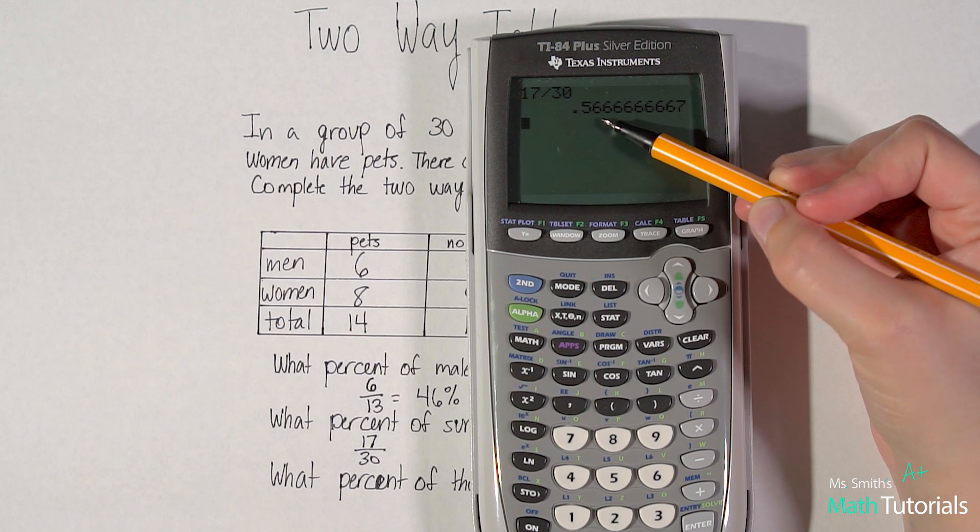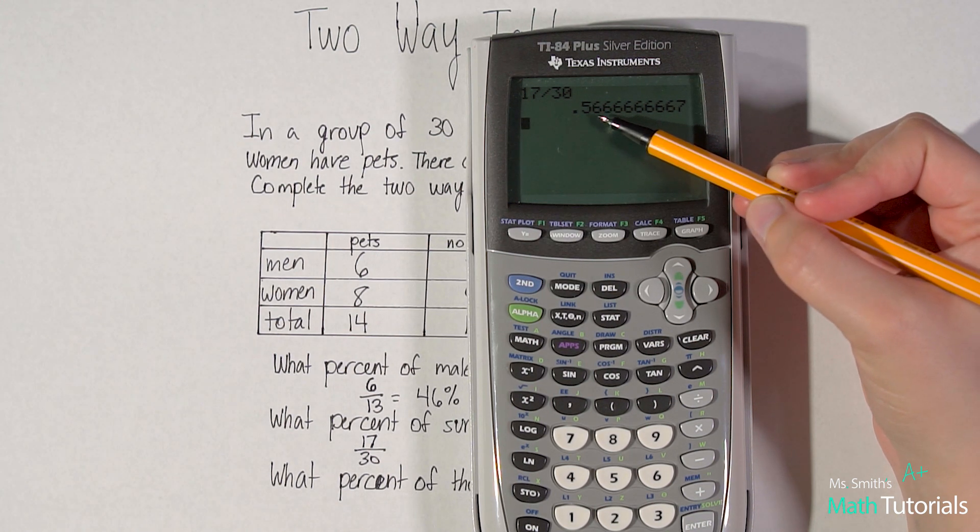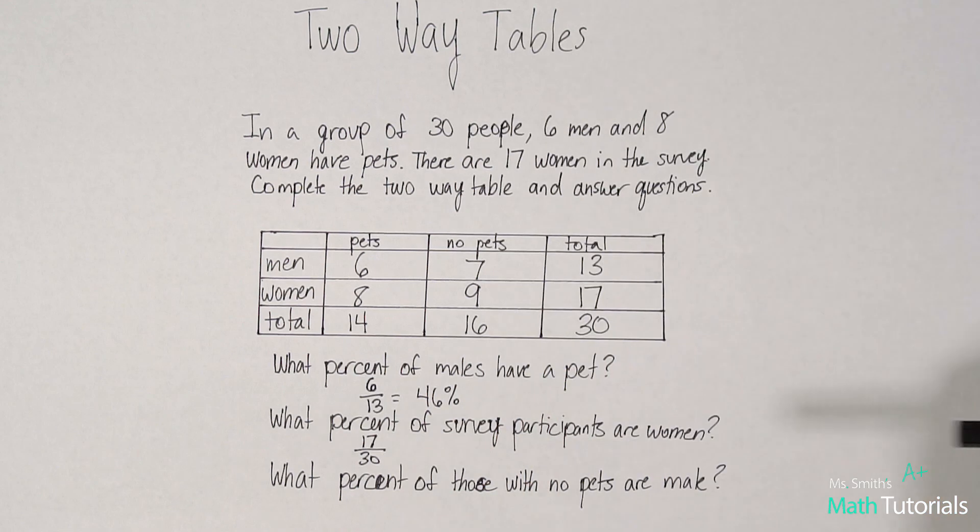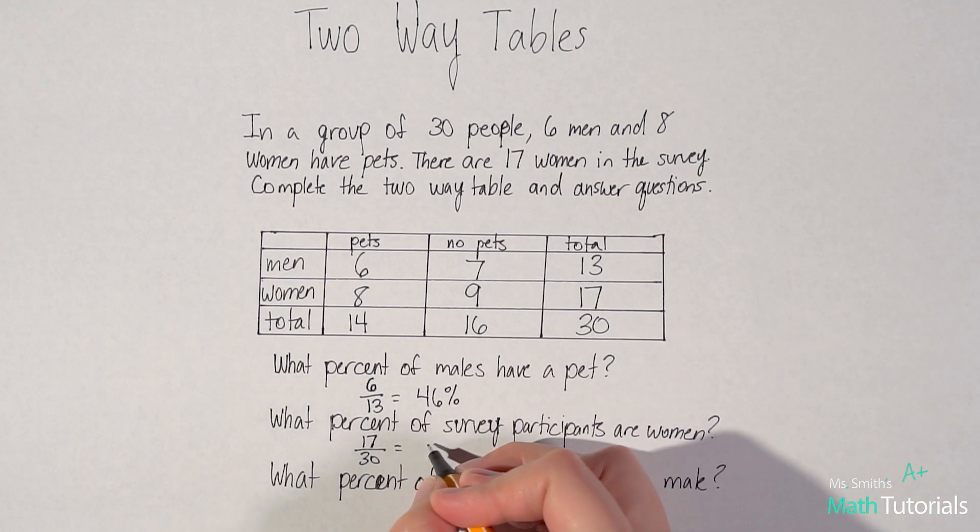I move my decimal place over two to the right. And then I'm going to round up since that's a six. So we'll say 57%.